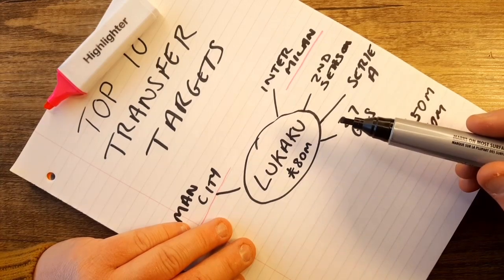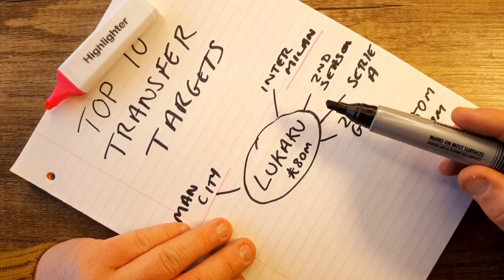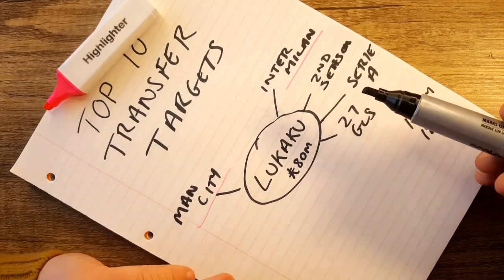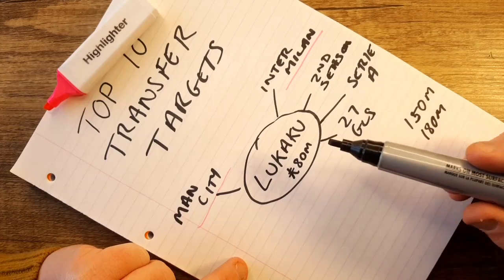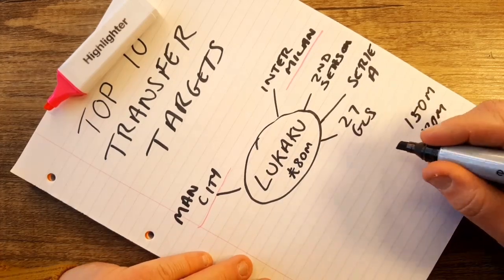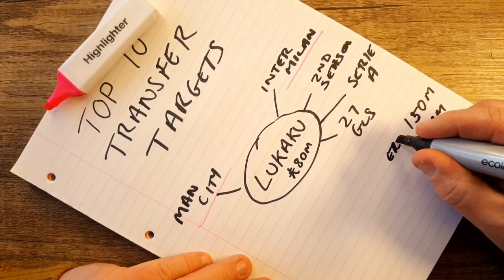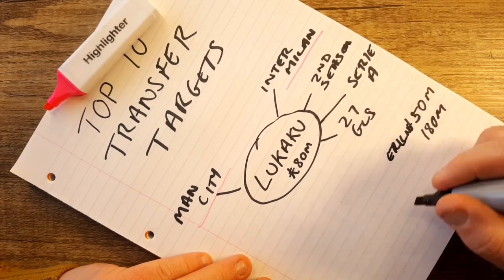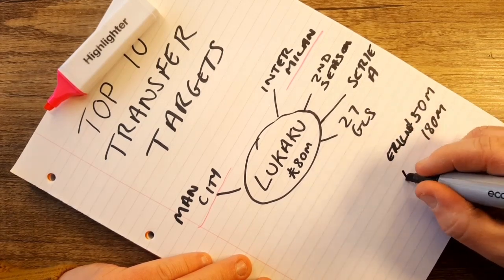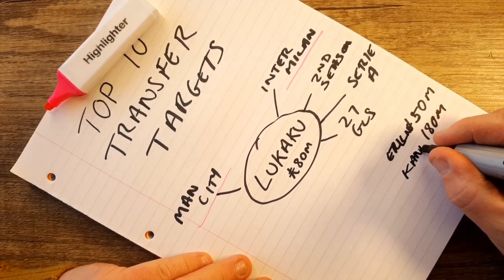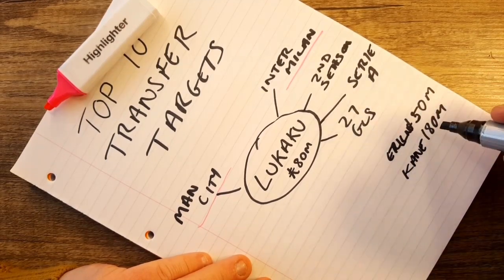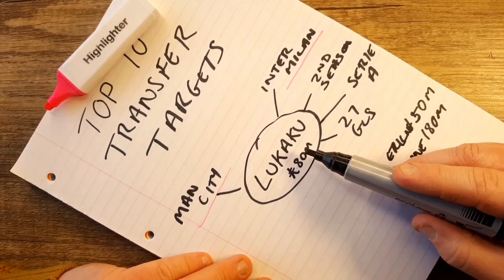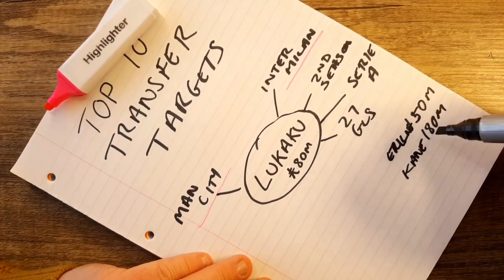Could he be the answer to Man City's problems with Aguero leaving and Jesus not being the man to rely on? Would he be a cheaper signing than Haaland and Kane? Part of the problem with using a marker pen, you don't have a lot of room for your writing.